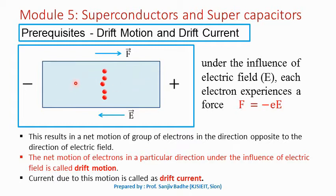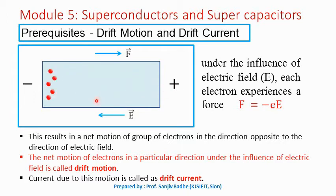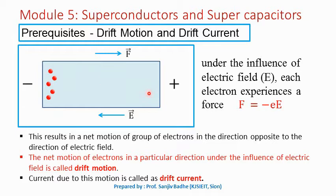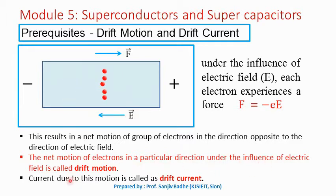In addition to this, the random motion of electrons will also be there, but the net motion of the group of electrons will be in the direction opposite to the direction of electric field. This net motion of electrons in a particular direction under the influence of electric field is called drift motion. The current due to this motion is called drift current — defined as the current caused by the electrons moving in a particular direction under the influence of electric field.